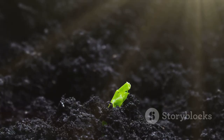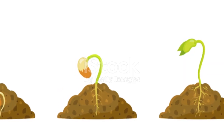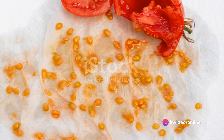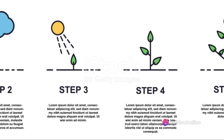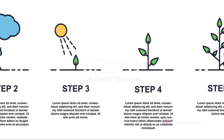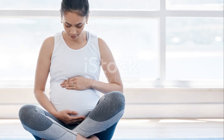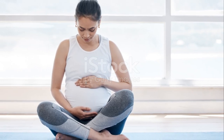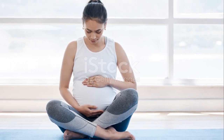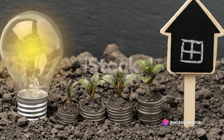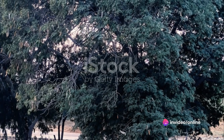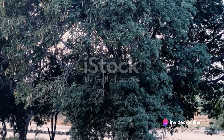How does a tiny seed become a towering plant? The answer lies in the magic of germination. When a seed is soaked in water and then planted in wet soil, it begins to germinate. This is the first step in the process of growth. Over time, the seed develops into a plant, its stem reaching for the sky, its leaves unfurling in a dance of life.